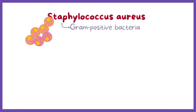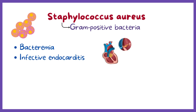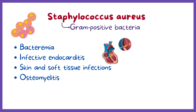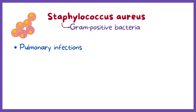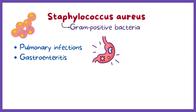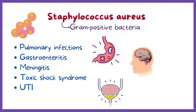Staphylococcus aureus, or S. aureus, is a gram-positive bacteria that causes a wide variety of clinical diseases. S. aureus are the causative agents of multiple human infections, including bacteremia, infective endocarditis, skin and soft tissue infections, osteomyelitis, septic arthritis, prosthetic device infections, pulmonary infections, gastroenteritis, meningitis, toxic shock syndrome, and urinary tract infections.